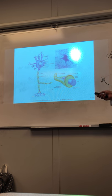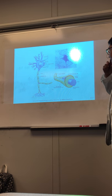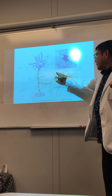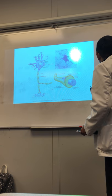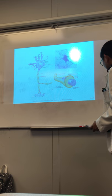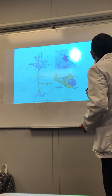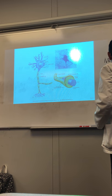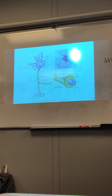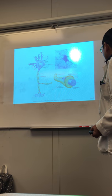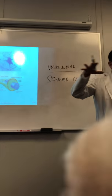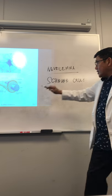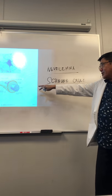Next, the axon. The axon is that big tail-like appendage and it is wrapped by — you see the yellow part? — that's known as the neurolemma. And the neurolemma is actually made up of the Schwann cells.